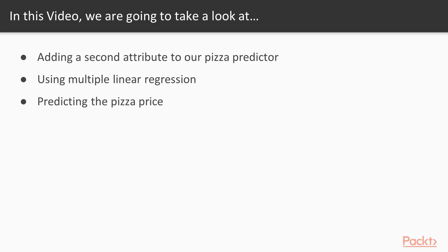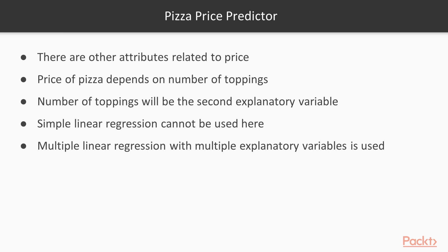In this video we'll take our pizza predictor one step further and add a second attribute to it. We'll do this using multiple linear regression and predict the pizza price again. Recalling your personal pizza eating experience, you might have some intuitions about other attributes of a pizza that are related to its price. For instance, the price often depends on the number of toppings on the pizza. Let's add the number of toppings to our training data as a secondary explanatory variable.